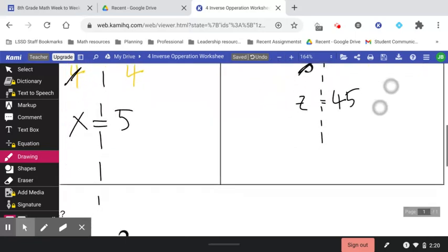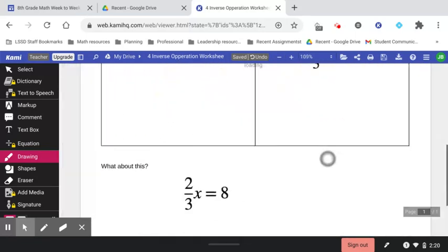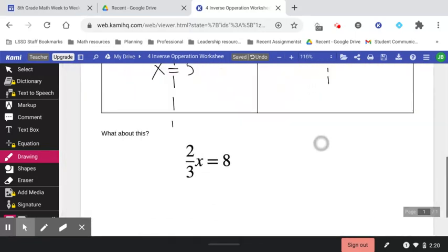We have one more example that presents itself from time to time, so we should take a quick look at it. What about something like 2 thirds times x equals 8? What do we do in this kind of situation?